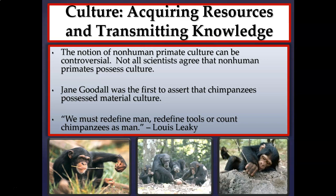Famous primatologist Jane Goodall was among the first to assert that chimpanzees possess material culture. She very famously observed chimpanzees fishing for termites. As simple as that might sound, it's actually a very specialized skill. There's a lot of learning and modification of the twig involved. It's not something the chimpanzee knows how to do automatically — they need to learn it from their elders, usually their mothers.